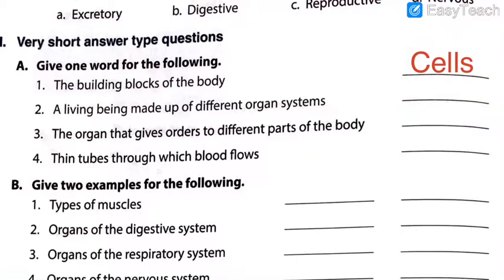Please write it down, students. Those writing in the rough notebook write: page 94, question 2, question A, then answer 1. Also please do not forget to write today's date so that when you send photos to your follow-up teachers, they will note on which date you solved it. So — the building blocks of the body: cells. Number 2: a living being made up of different organ systems.